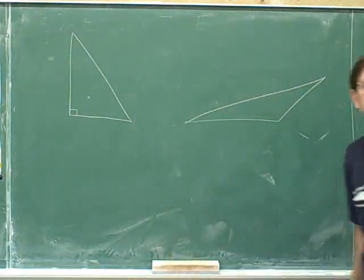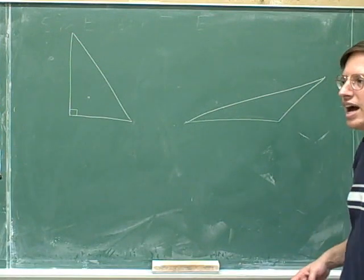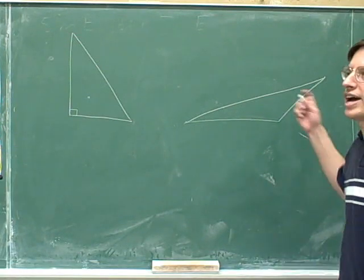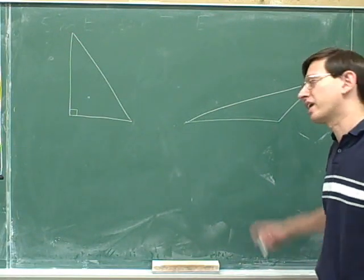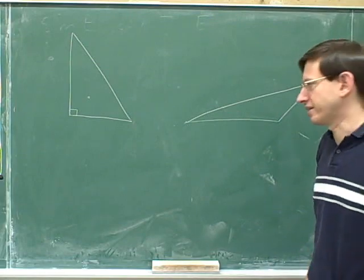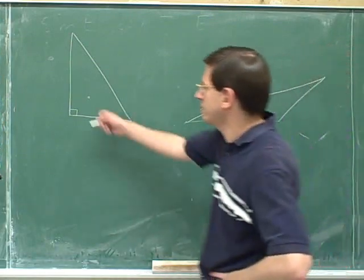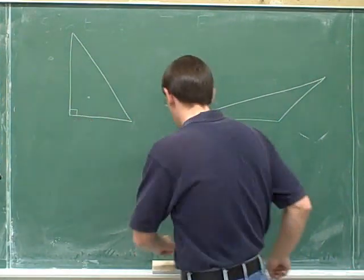None of the angles in this triangle are 90 degrees, so this is not a right triangle — it doesn't have a right angle. We're not going to be studying this type of triangle directly. We're going to be studying the type of triangle that has a 90 degree angle.